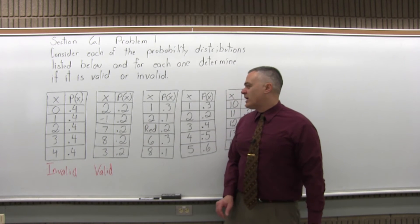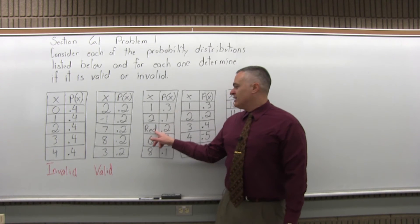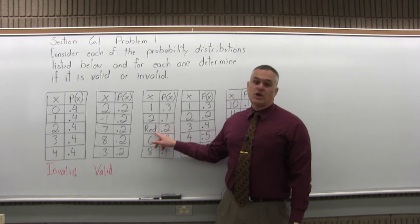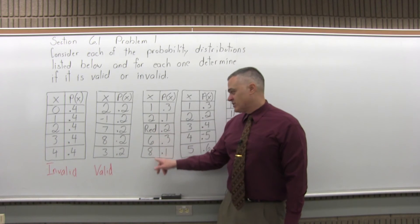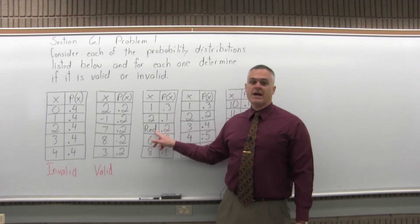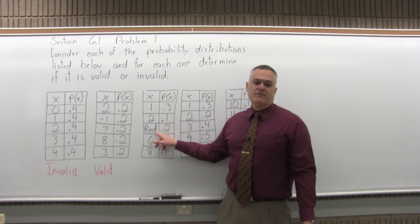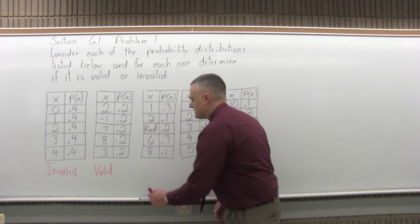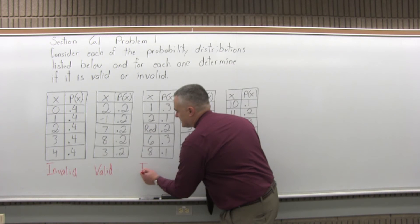Now, the third one, one of the items in the first column is not a number. So the first rule is everything in the first column must be a number. The fact that we have red, I don't even have to consider the other rules. Right away, this third probability distribution is invalid.